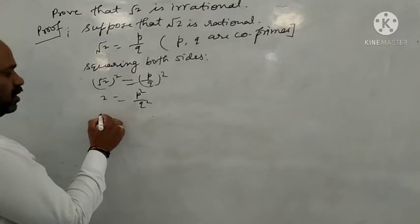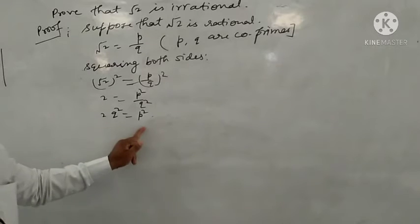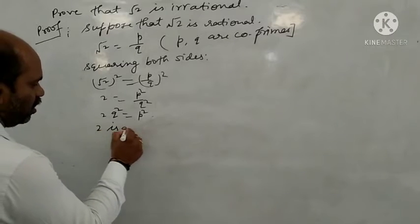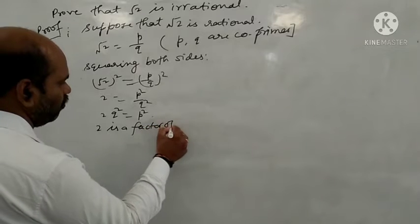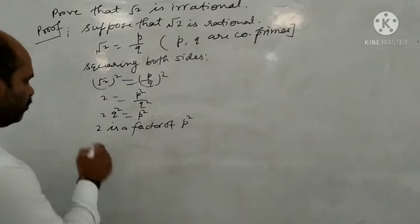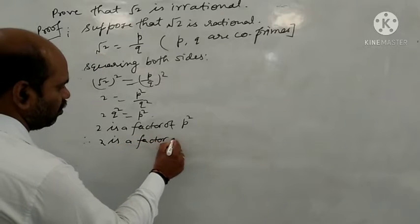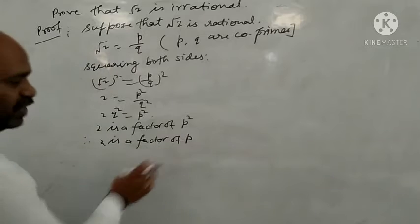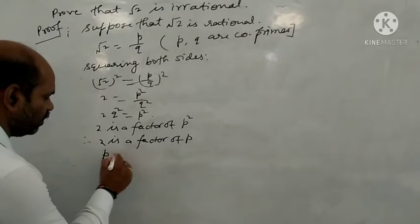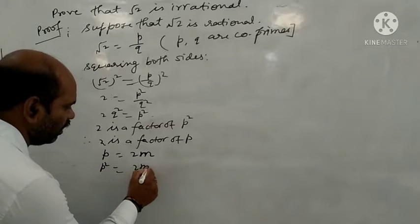Since √2 = P/Q, squaring both sides gives 2 = P² upon Q². Multiplying both sides by Q² gives 2Q² = P². So 2 is a factor of P², which means 2 is a factor of P.